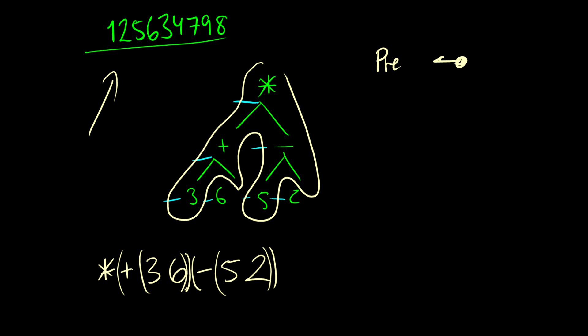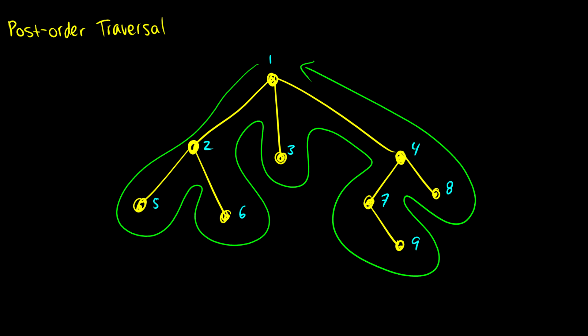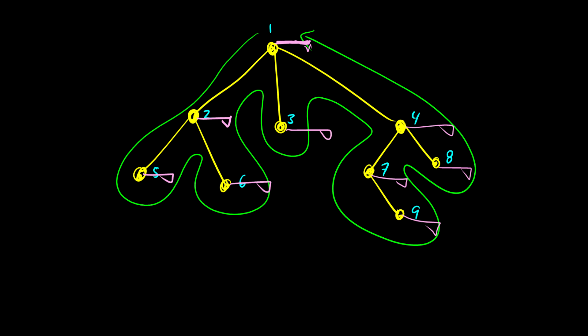What about post-order traversal? We're still going to take the same path. But with post-order traversal, because we say post, we put our flags on the right. Then we order them this way - whenever we hit the flag, we write it down. With this way, we hit 1 at the very last, so the root is the last one, which is good. In post-order traversal, we have 5, 6, and then 2, since 2 is operating on 5 and 6, then we hit 3, then 9, 7, 8, 4, and finally 1. That's post-order traversal.